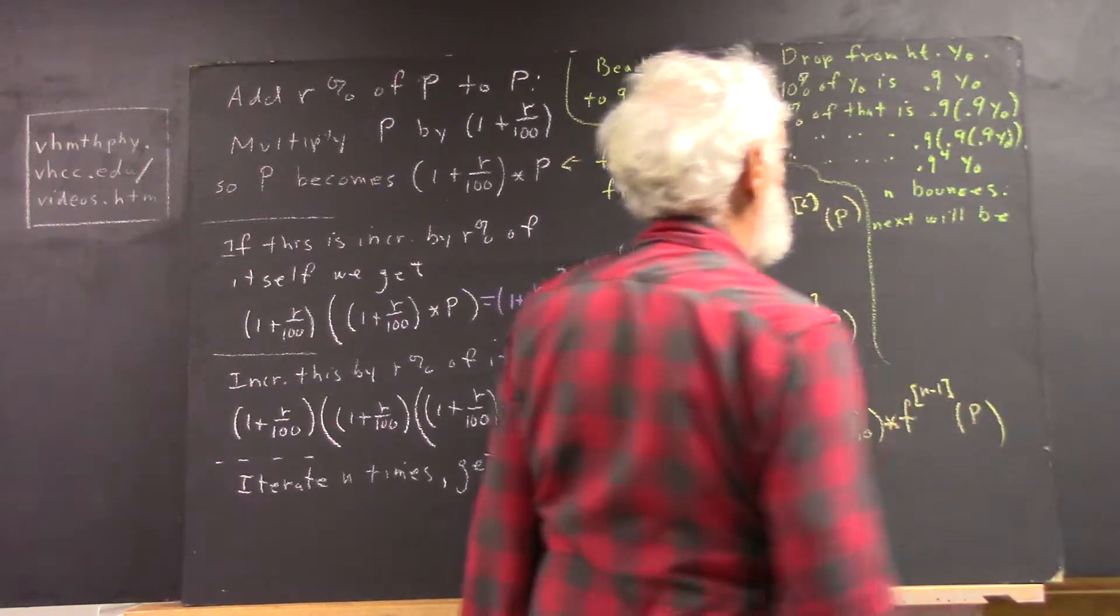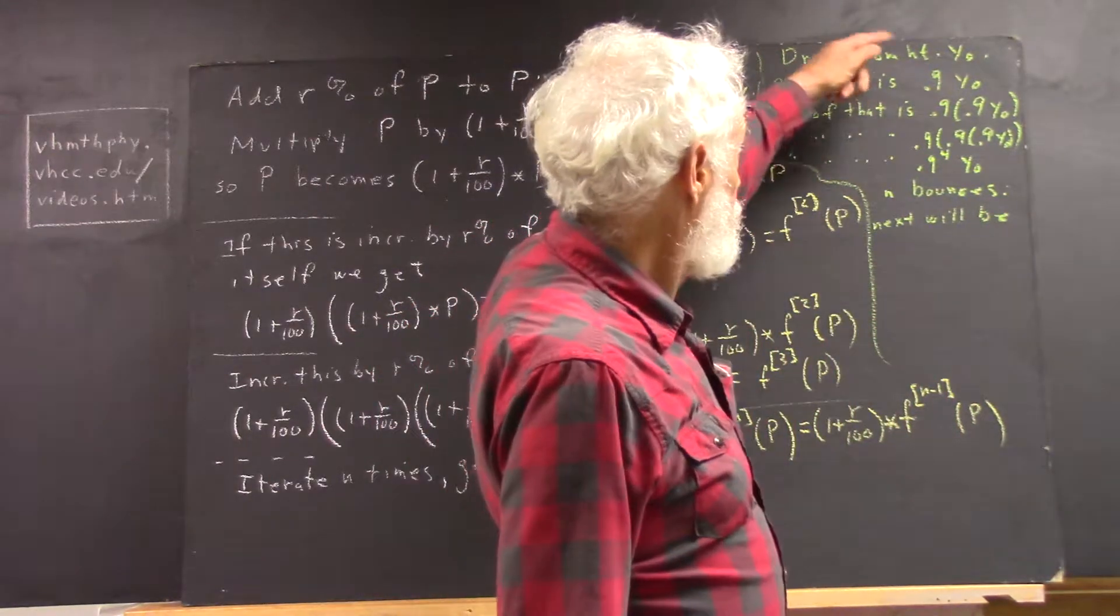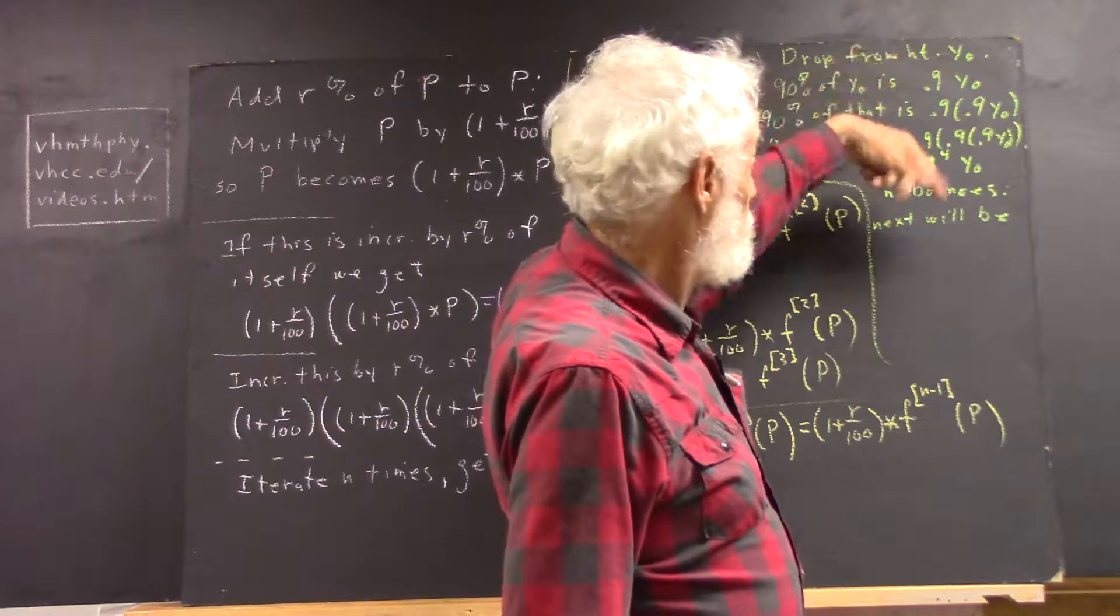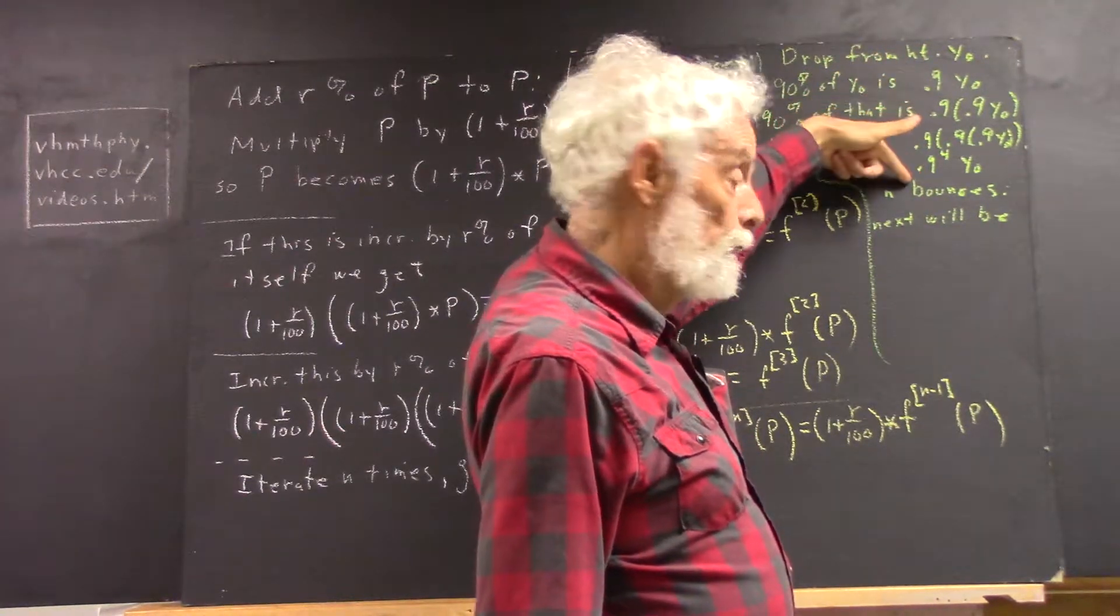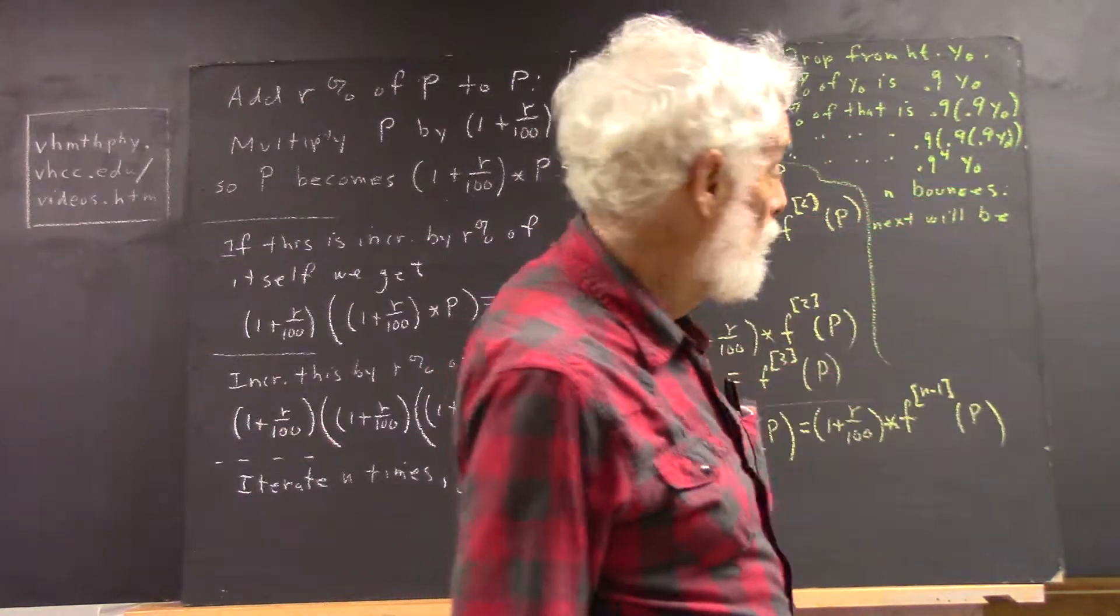The next bounce will be what? Well, let's see. This is after one bounce. You drop it. It bounces. There's how high it is. This is after two bounces, three bounces, four bounces. Every time we're multiplying by 0.9.